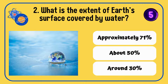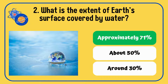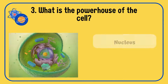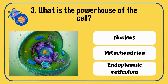What is the extent of Earth's surface covered by water — approximately 71 percent, about 50 percent, or around 30 percent? It is approximately 71 percent.